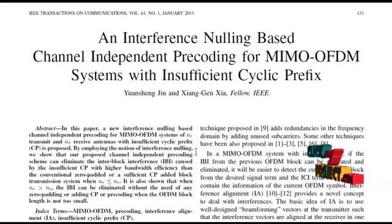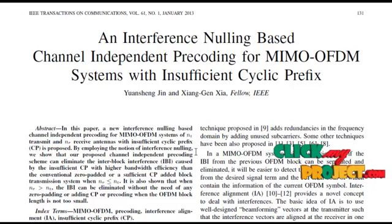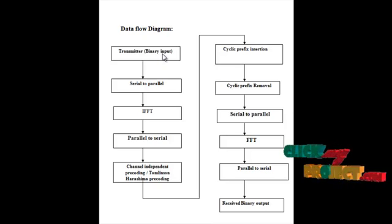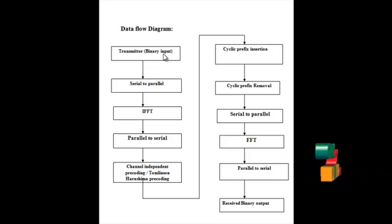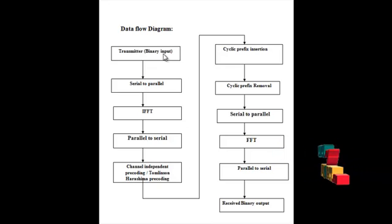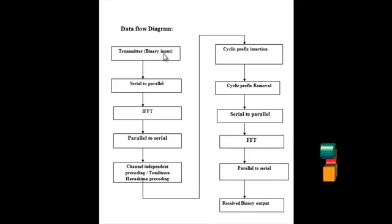It also shows that when N_R is greater than N_T, the IBI can be eliminated without the need of any zero-padding, adding cyclic prefix, or pre-coding when the OFDM block length is not too small. MIMO is an antenna technology for wireless communications used in both the transmitter and receiver, employing two or more antennas for the transmission of multiple signals at source and destination.